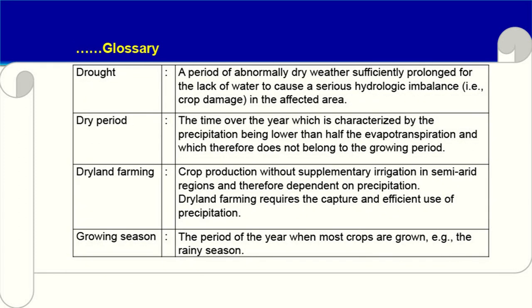Drought: a period of abnormally dry weather sufficiently prolonged for the lack of water to cause a serious hydrological imbalance, that is, crop damage in the affected area. Dry period: the time over the year characterized by precipitation being lower than half the evapotranspiration, which therefore does not belong to the growing period. Evapotranspiration is the total of water losses by evaporation and transpiration combined. Dry land farming: crop production without supplementary irrigation in semi-arid regions, dependent on precipitation.